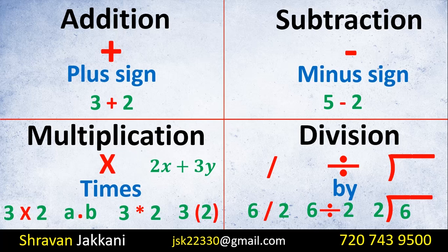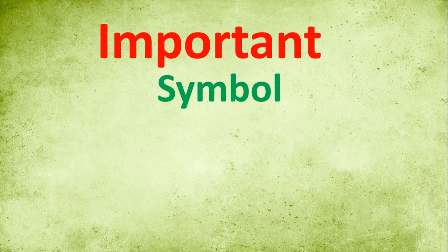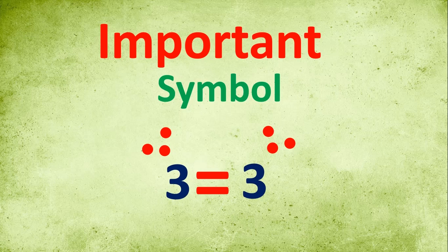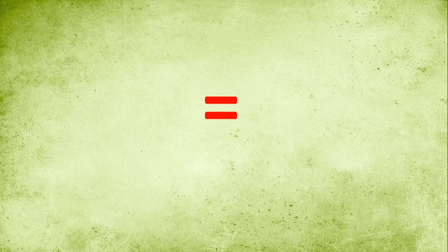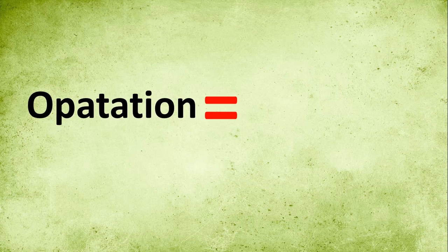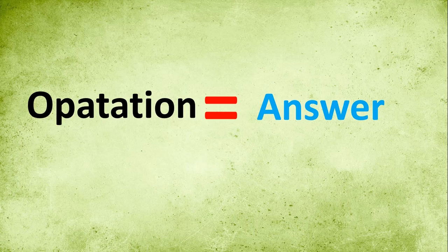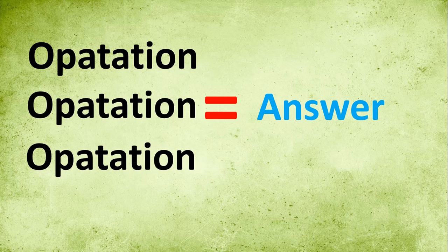We use 4 basic math operations. An important symbol is the equals sign, which tells us that two values are equal. That's why we call it equals — it gives the answer to the operation or the set of operations.